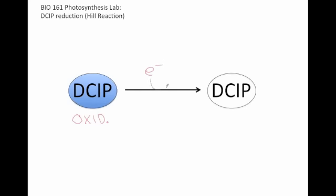and then it will become reduced. In its reduced form, the DCIP molecule is clear.